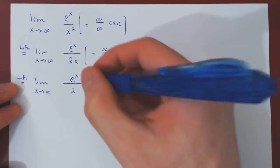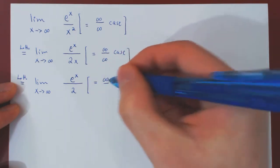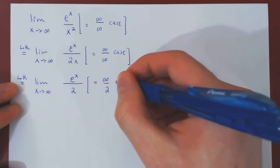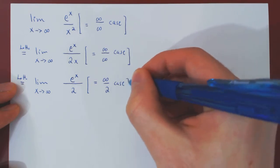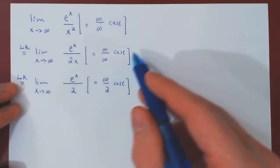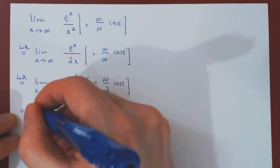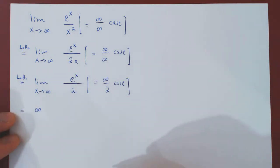And now we have an interesting case. As x goes to infinity, e to the x goes to infinity. 2 is a constant, so it stays 2. So, the numerator blows up to infinity over 2. It still just blows up to infinity. So, the limit is infinite.